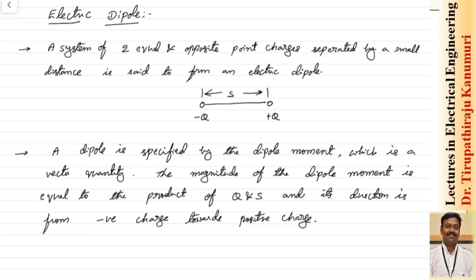Generally the dipole is specified by the dipole moment. The dipole moment is a vector quantity. Always the dipole moment is directed from the negative charge to the positive charge. This will be the direction of the dipole moment, and this dipole moment is given by capital P. So this dipole moment is nothing but the product of the charge — that means any charge, either plus Q or minus Q — multiplied by the distance separating between them.